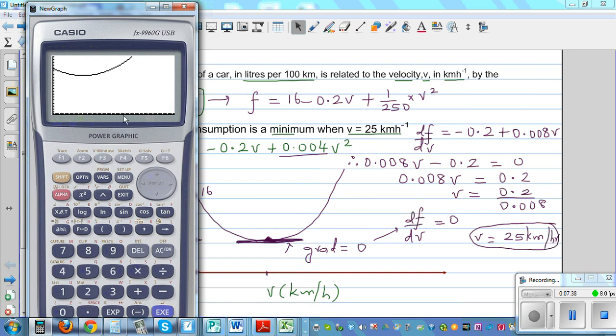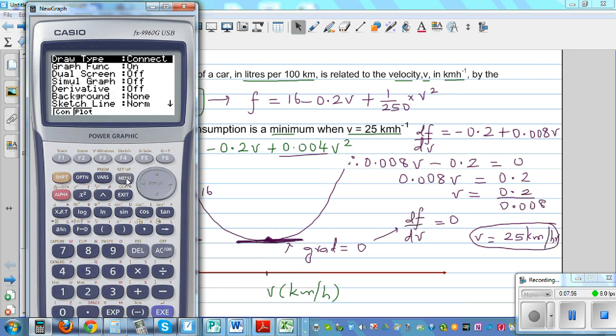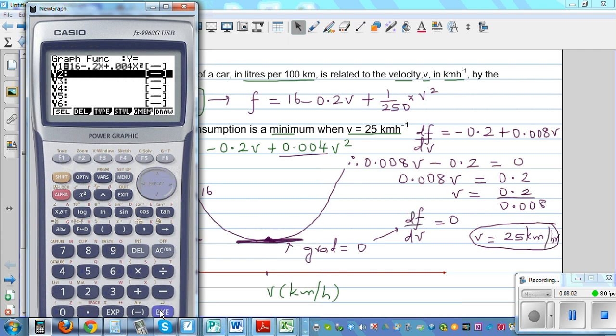On the X axis, I've taken velocity. On the Y axis, I've taken the fuel consumption. So this point, which is the minimum, at this point you are going to get the gradient of 0. So if you go to setup, shift menu, and if you turn the derivative on, you can see all of them together. You can see graph and calculus together.